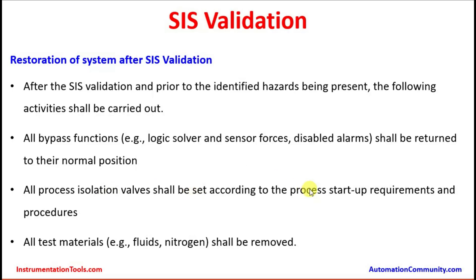All process isolation valves are to be set according to the process startup requirements and procedures. All test materials — such as fluids, nitrogen, etc. — shall be removed. There could be fluids or nitrogen injected into process lines to verify that pressure sensors or temperature sensors are reading correctly, and those must be removed because during actual process conditions, hydrocarbons being sent to the same lines may create a hazard. Likewise, all bypass functions and force settings that simulate a particular level or pressure to trigger a logic action must be removed, as it may sometimes be done in the application program when field simulation is not feasible.